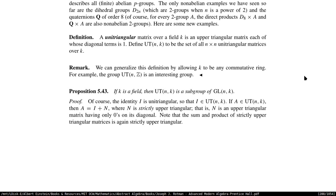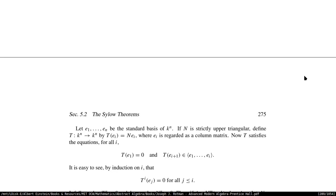If A is a unitriangular matrix, then A can be written as I plus some strictly upper triangular matrix N, where N is upper triangular having only zeros on its diagonal. The sum and product of strictly upper triangular matrices is again strictly upper triangular — that's from linear algebra. If N is a strictly upper triangular matrix, then applying induction: T^i of E_j equals 0 for all j less than i, and it follows that T^n equals 0, so N^n also equals 0.